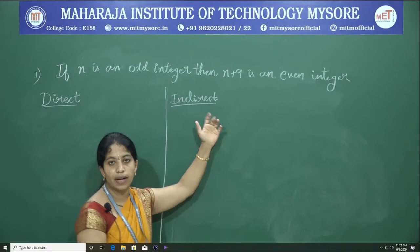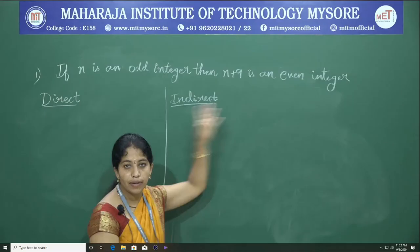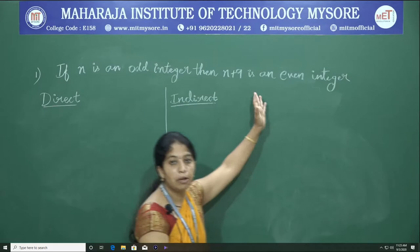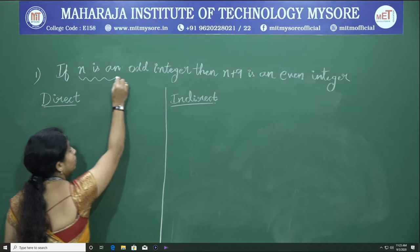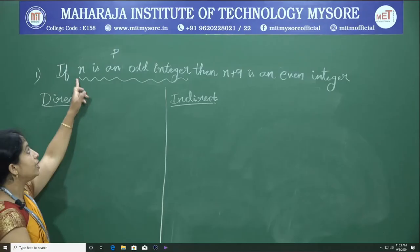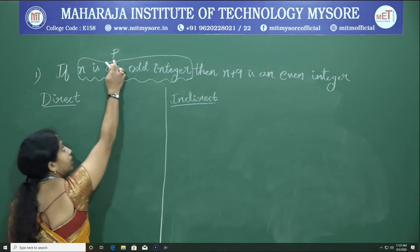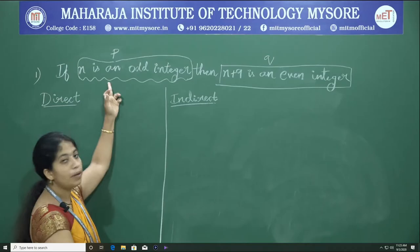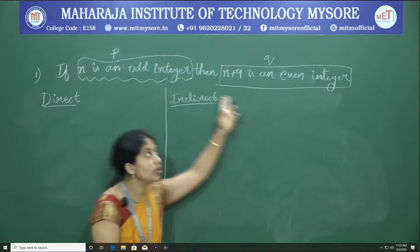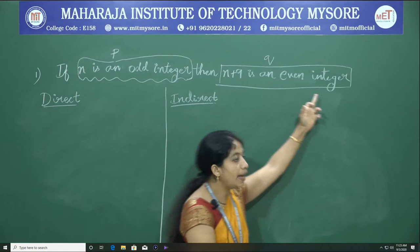Now let us solve problems using direct proof, indirect proof, and contradiction proof for the given conditional statement: 'If n is an odd integer, then n plus 9 is an even integer.' This statement has two simple propositions: P denotes 'n is an odd integer' and Q denotes 'n plus 9 is an even integer.'